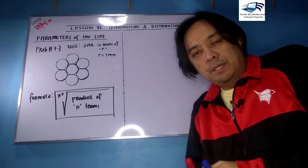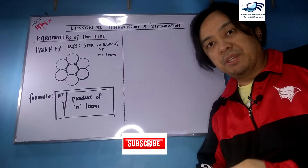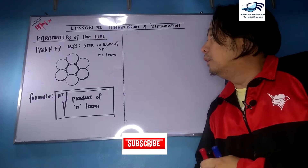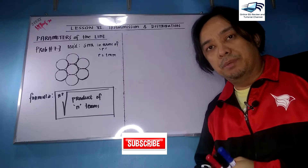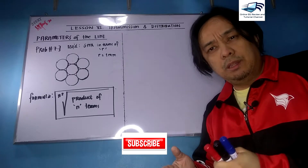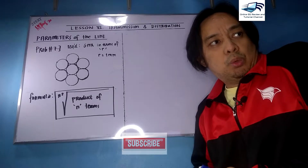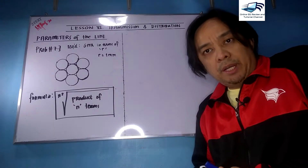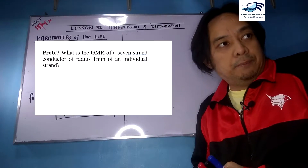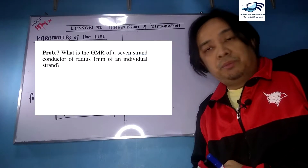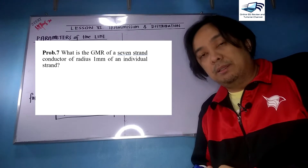Hello once again. We are on Problem 7 on Parameters of the Line under Lesson 4 Transmission and Distribution. Let us read the problem first: what is the GMR or Geometric Mean Radius of a seven-strand conductor if the radius of an individual strand is one millimeter?